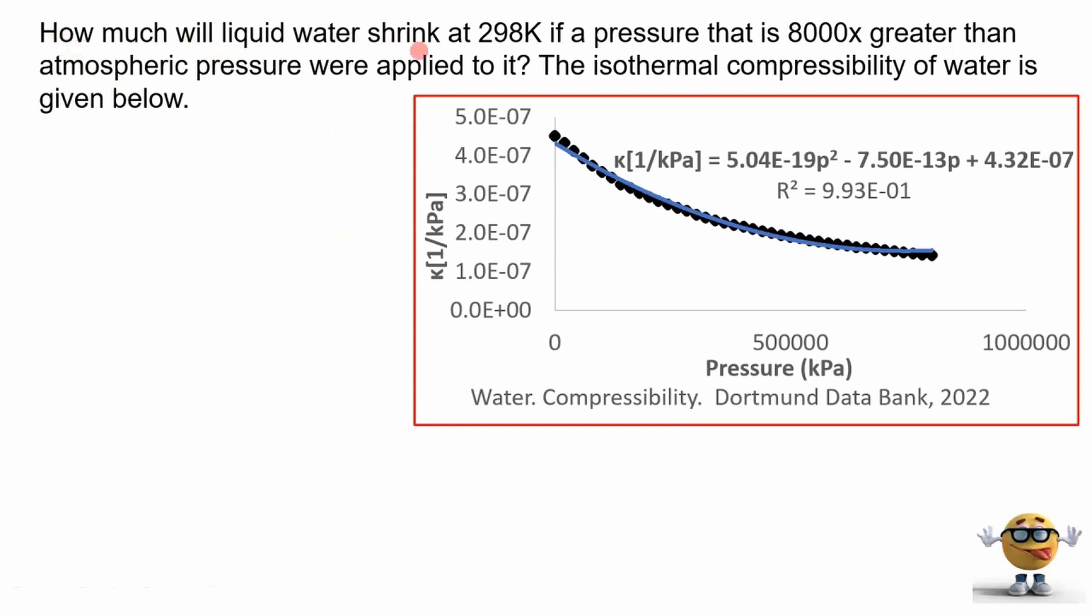So here's the question. How much will liquid water shrink at 298 Kelvin if a pressure that is 8,000 times greater than atmospheric pressure were applied to it? And the isothermal compressibility of water is given below.